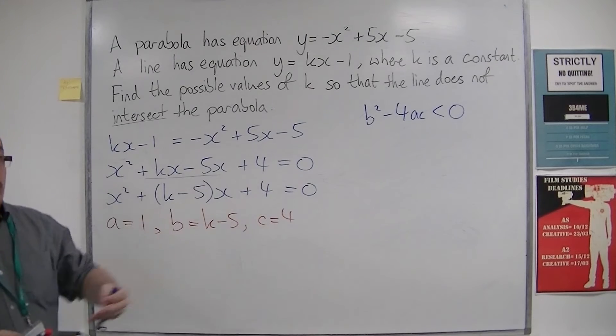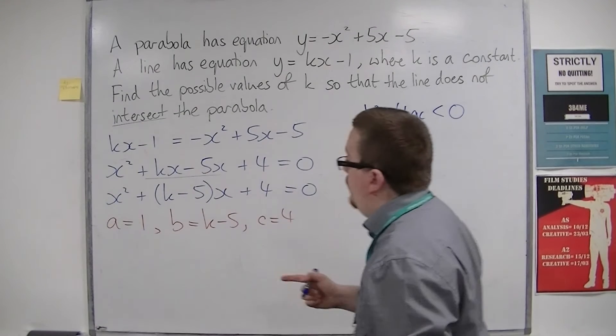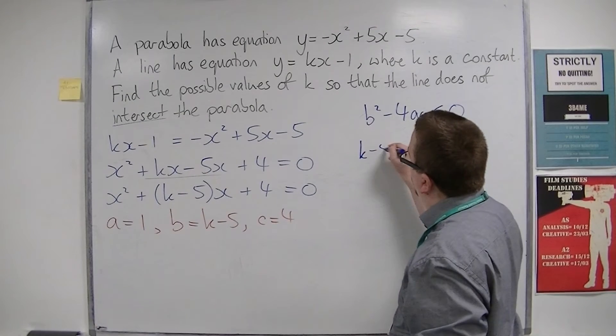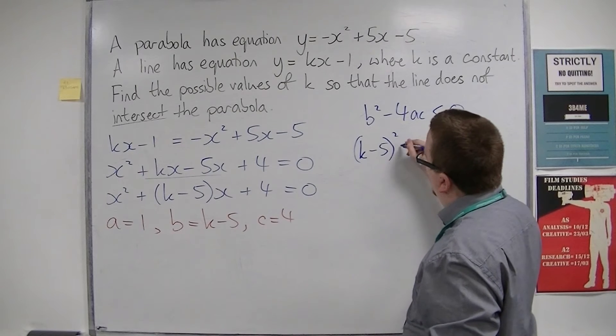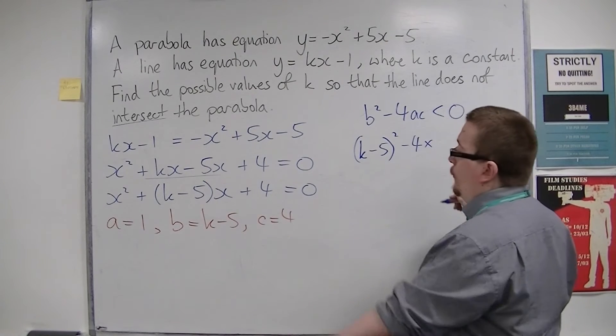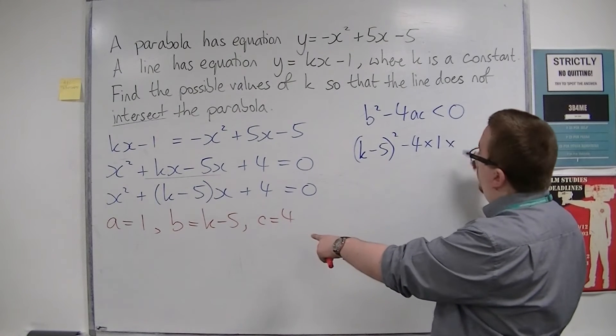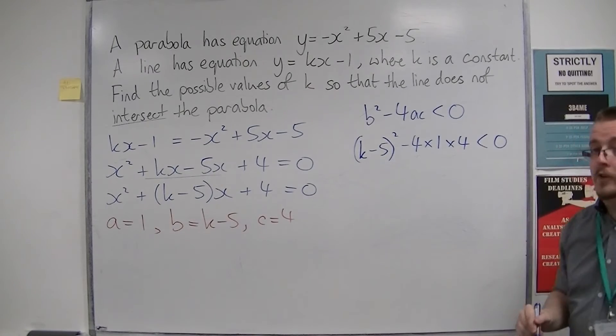So we substitute these values in. We're going to get b squared, so k minus 5 squared, take away 4 lots of a, which is 1, times c, which is 4. And that's got to be less than 0.